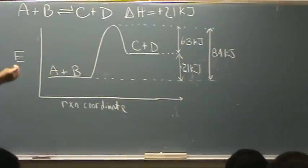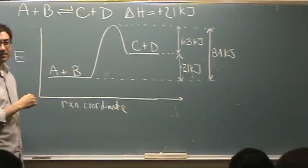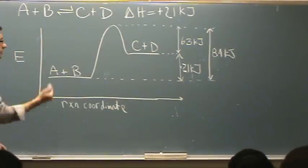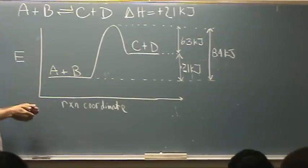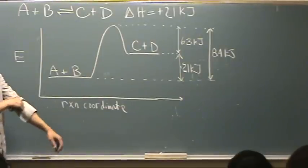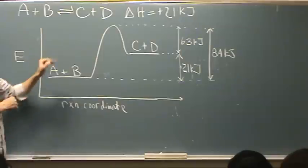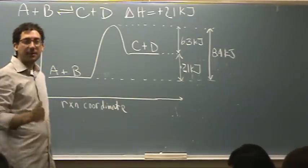So that would be the activation energy going in reverse. And the enthalpy going in reverse would be negative 21 kilojoules. Does that make sense? So the reverse reaction is actually a little more favorable because you go down lower in energy, it has a lower hump, etc. And that's true for exothermic. Endothermic is usually harder to do. You have a bigger hump, and you're going up in energy for those products.